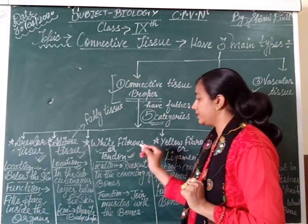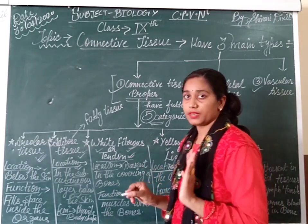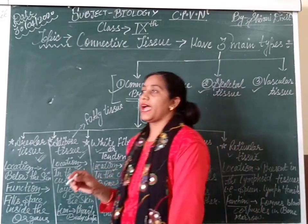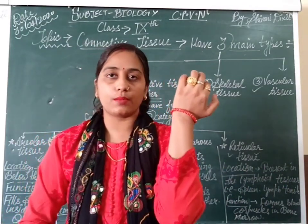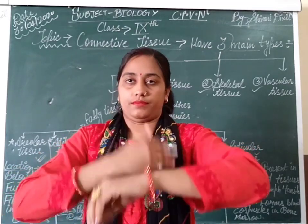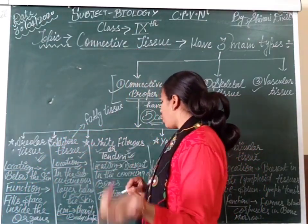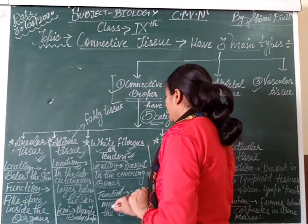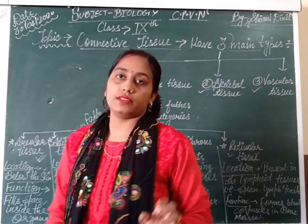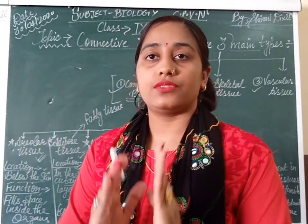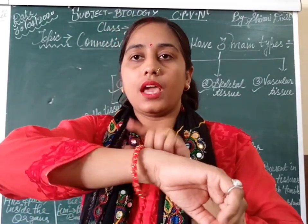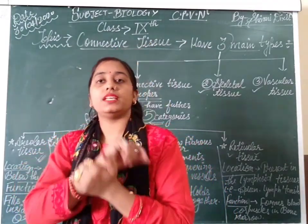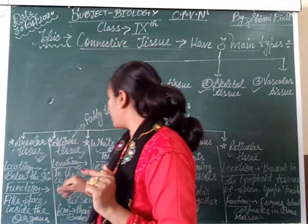The third category is white fibrous tissue, also known as tendons. They are fibrous in nature and are present covering the bones. Each bone in our body has a cover — a layer of this tissue called tendon. The function of tendons is to join muscles with bones. The muscles in our body get attached to the underlying bones through these tissues called tendons.